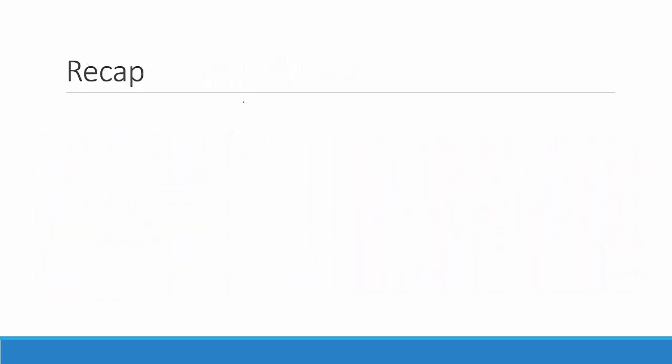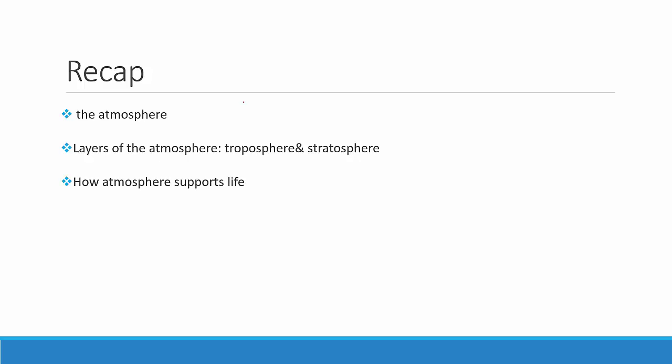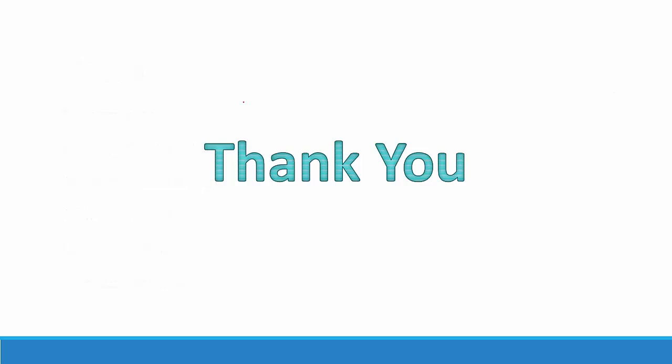With this we complete this part of the chapter. Let's do a quick recap. In this chapter we studied about the atmosphere. We saw different layers of the atmosphere, concentrating on the troposphere and stratosphere. We saw how atmosphere supports life. We saw what air contains — nitrogen, oxygen, and other impurities. We saw four different properties of air and did simple experiments to prove each property, and finally we saw atmospheric pollution. If you have any doubts, please feel free to comment below. If you like this video, please hit the like button, share it with your friends, and subscribe to our channel. Thank you.